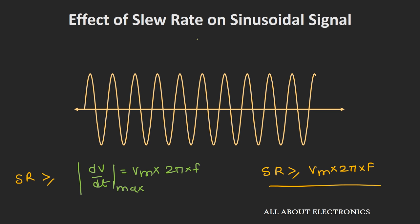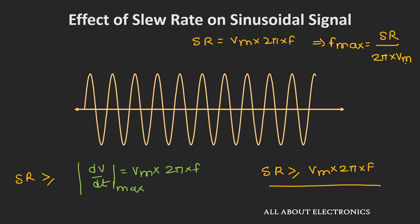Taking the worst case where slew rate equals the maximum rate of change of the sine wave, we can find the maximum frequency for which there is no distortion. That frequency is given by: f_max = slew rate / (2π × Vm). Up to this frequency you will not see any distortion, and this frequency is sometimes known as the power bandwidth of the op-amp.